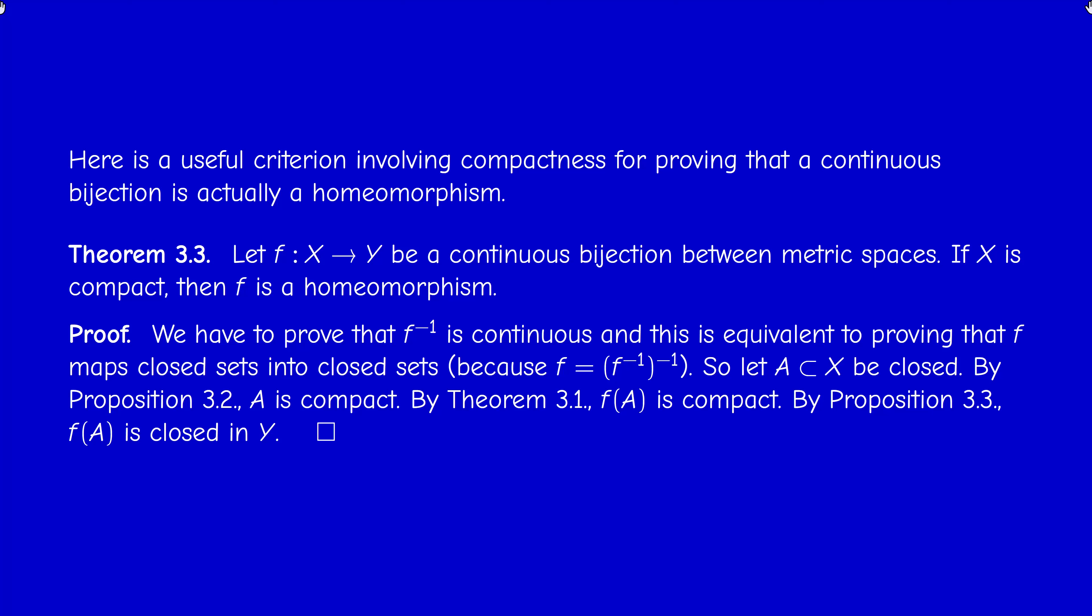But since f conserves compactness, this is proposition 3.2, f(A) is compact. But by proposition 3.3, because we live in a metric space, f(A) is closed. So the direct image of a closed set is closed. And this precisely means that f^{-1} is continuous. So this concludes the video and section 3.1 as well. Thank you for your attention, and see you next time.